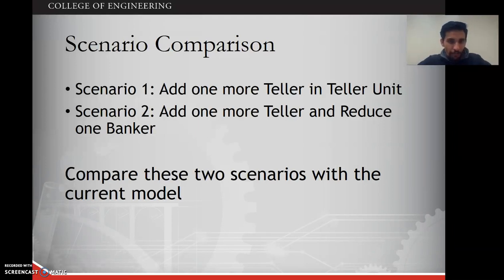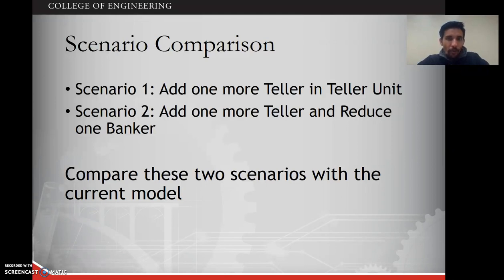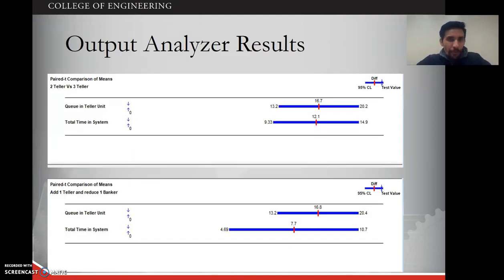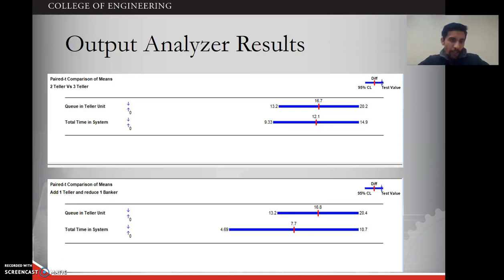From this result, we decided to compare two scenarios with the current model. Scenario one is to add one teller to the teller unit. Scenario two is to add one more teller to the teller unit and reduce one banker from the banker unit. The output analyzer shows that for both scenarios, the confidence interval does not include zero, meaning each scenario is significantly different from the current model.